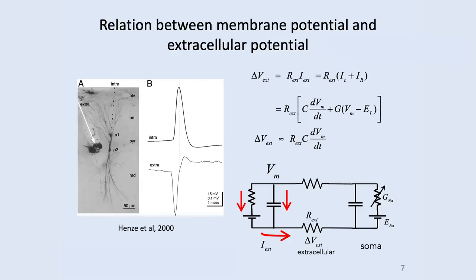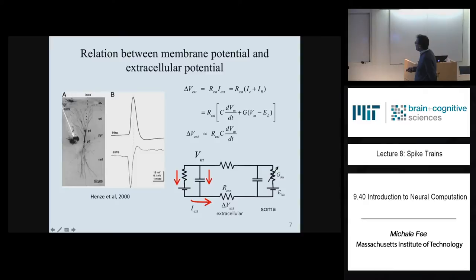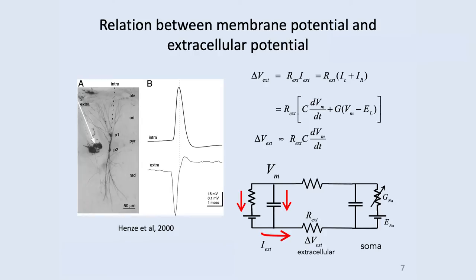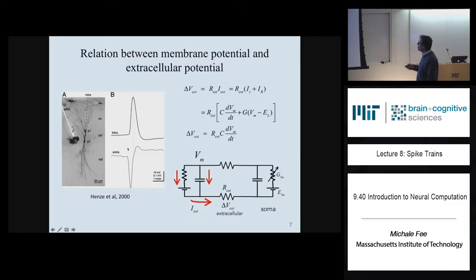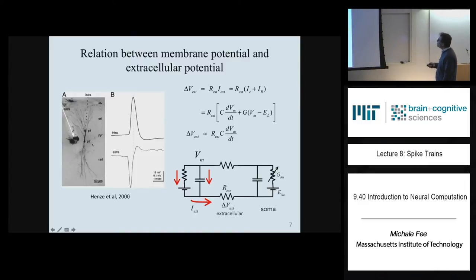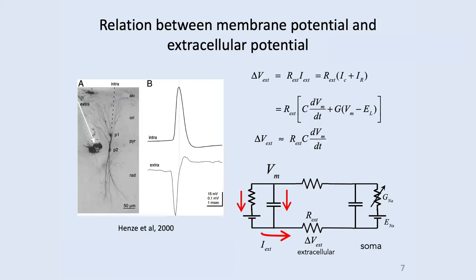Earlier experiments from Yuri Buzaki's lab recorded simultaneously from a cell intracellularly and from a microwire electrode placed near the soma extracellularly. The extracellular signal is actually quite close to the derivative of the intracellular signal. The voltage near the soma goes negative because during the rising phase of the action potential, sodium ions flow into the soma from extracellular space. Current flows out of the dendrite and travels back through extracellular space to the soma — so the soma acts like a voltage sink, and the voltage goes negative near the soma.